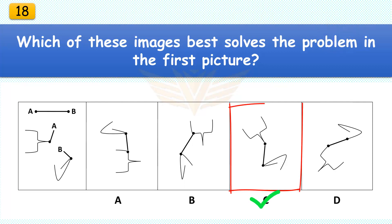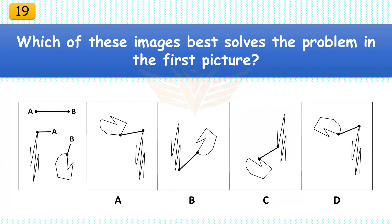Which of these images best solves the problem in the first picture? The correct answer is C. Rotate the fancy bracket 45 degrees and then rotate the greater than sign 135 degrees.